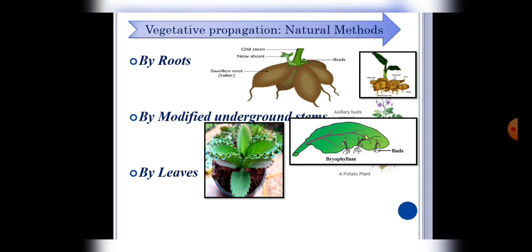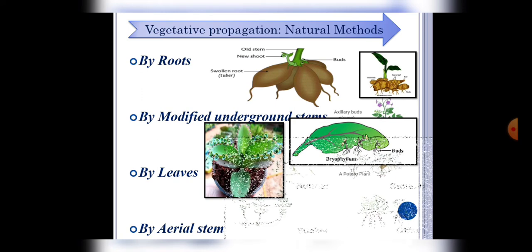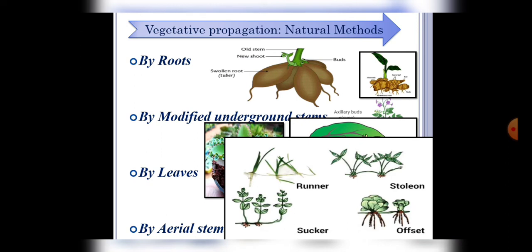Next is by aerial stem. Students, there are some plants in which a slender branch grows from the base of the stem and bends to touch the soil. It develops buds and roots at the point of contact with the soil and then these buds develop into a new plant. Wild strawberry and some other plants are the best example of this process.